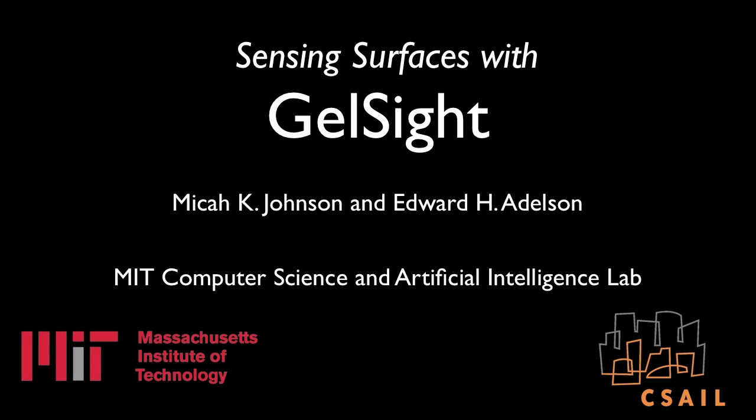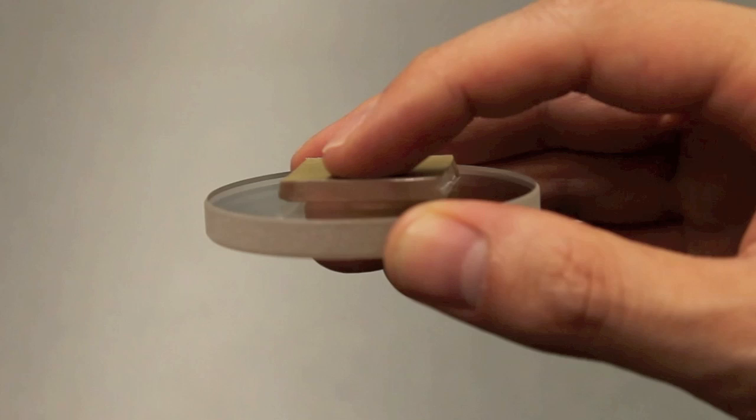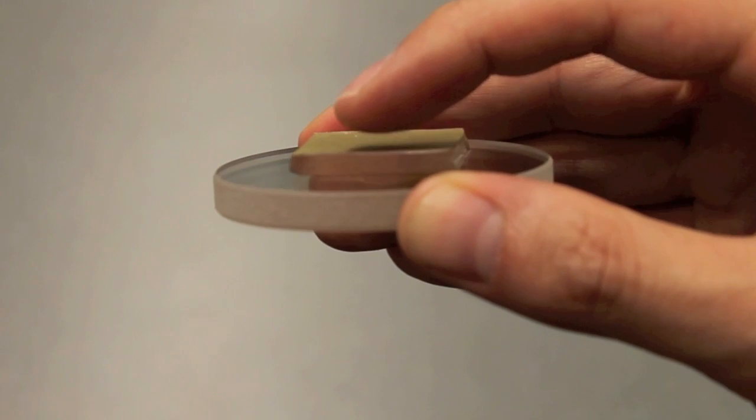Sensing surfaces with GelSight. This is GelSight, a block of clear rubber with a painted skin. This simple system has remarkable properties that aid surface measurement and visualization.